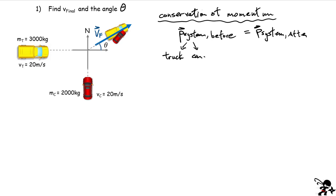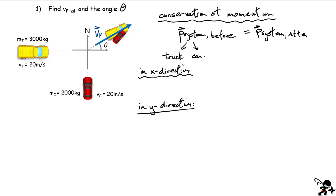Since this is a two-dimensional problem, you have to break things down into components. I'm going to look at the x direction separately from the y direction. In the x direction I'll write conservation of momentum, and in the y direction I'll also write an expression for conservation of momentum. In the x direction, the only thing moving before the collision is the truck. So I write the total momentum of the truck: mass of the truck multiplied by velocity vt, which is 20 m/s. Taking east as positive, this must equal the total momentum in x after the collision.